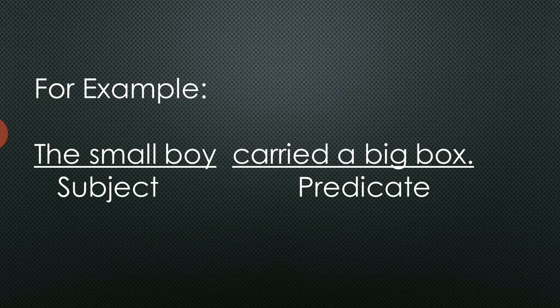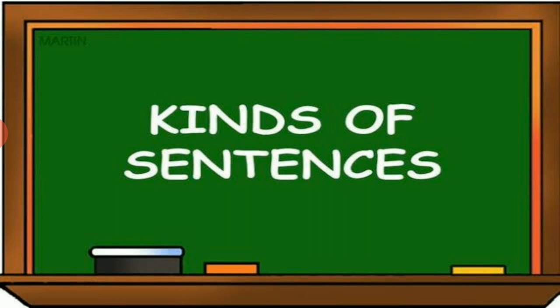In the predicate 'carried a big box,' carried is the verb and 'a big box' is the object which receives the action performed by the subject, the small boy. Every sentence must have a subject and a predicate. Usually the subject comes first, but in some sentences it may come after the predicate — for example, 'Here comes the bus,' where 'the bus' is the subject. In imperative sentences, the subject is left out; it is understood that the subject will be 'you.'